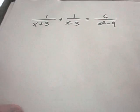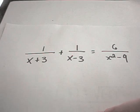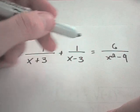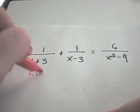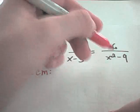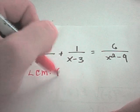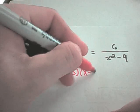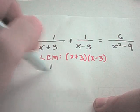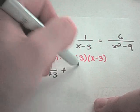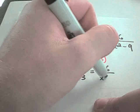Let's do one more. 1 over x plus 3 plus 1 over x minus 3 equals 6 over x squared minus 9. The least common multiple of x plus 3, x minus 3, and x squared minus 9 — since x squared minus 9 factors as x plus 3 times x minus 3 — is x plus 3 times x minus 3. I'll multiply both sides by that.